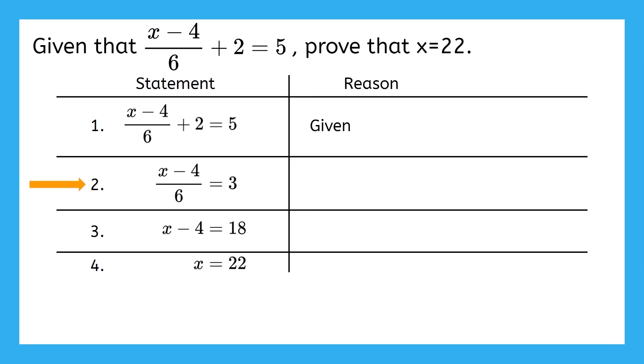For our next statement, we have that x minus 4 over 6 equals 3. How did we get here from the step above? We had to subtract 2 from each side. What property of equality tells us that we're allowed to subtract something from both sides of our equation? Check your table from the property review activity if you need. The subtraction property of equality.